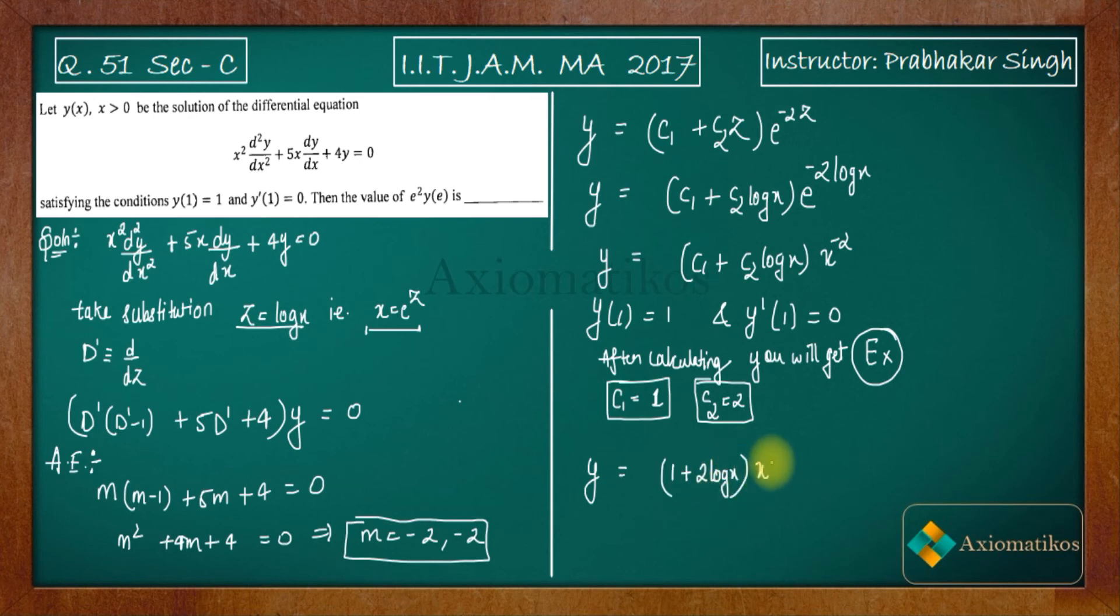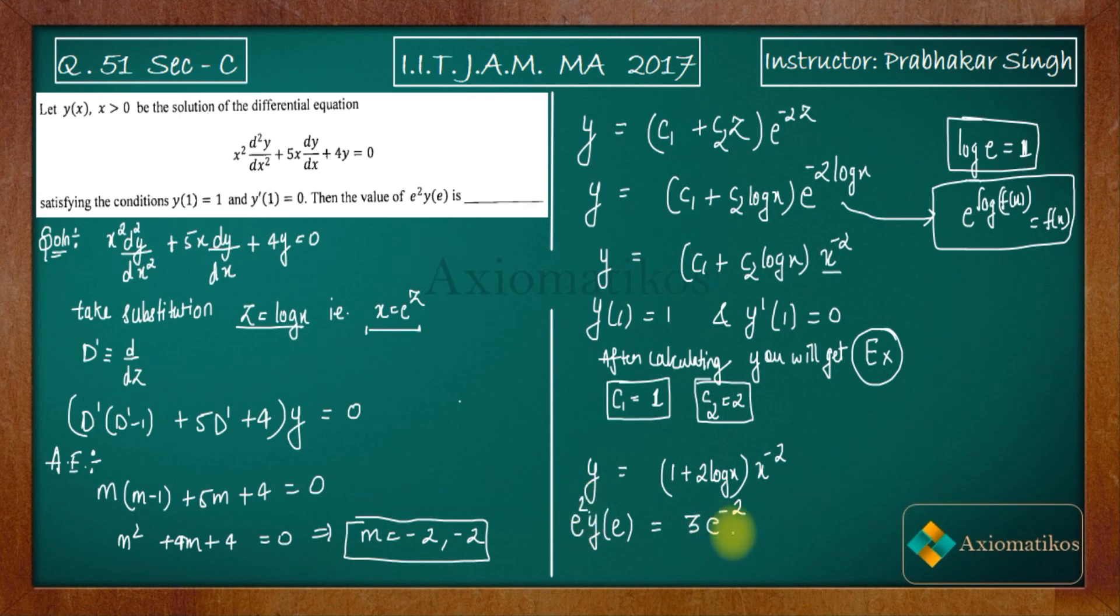What you have to find out is y(e). You know that log e = 1. I'm using e^(log f(x)) = f(x). So y(e) will be (1 + 2 log e)e^(-2). See, log e is 1, so you will get 3e^(-2). Now multiplying e², you will get 3. So for this problem the answer is 3.